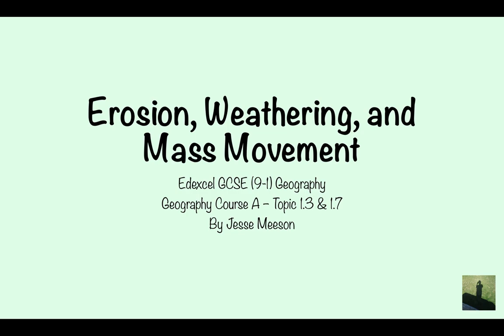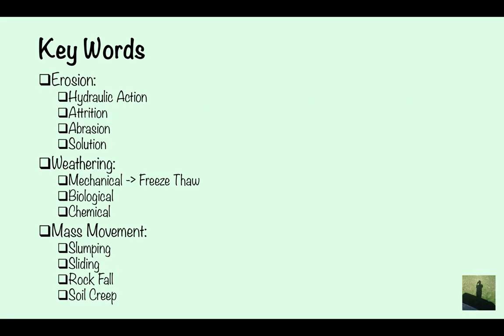Erosion, weathering and mass movement is part of the 9 to 1 Edexcel GCSE Geography course. For the course there are four types of erosion, three types of weathering and four types of mass movement that you need to learn about.